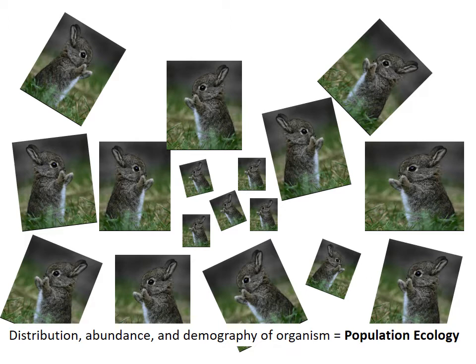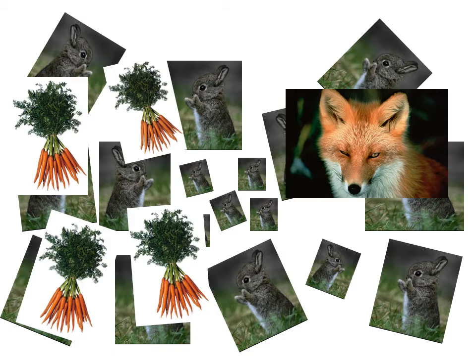Adding more species — like carrots and foxes — and studying the populations of all three and how they interact with each other becomes community ecology, because community ecology is the interaction among populations of multiple species that live together in an area. Those interactions could include things like predation and herbivory.